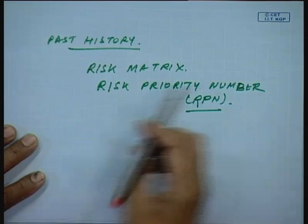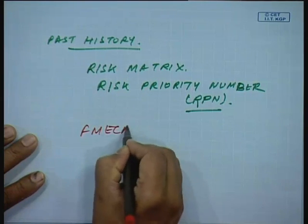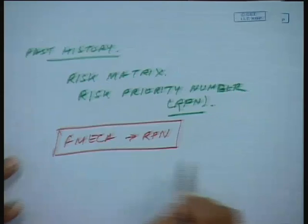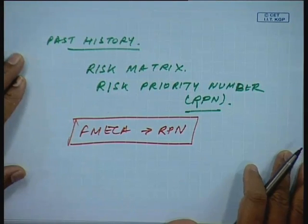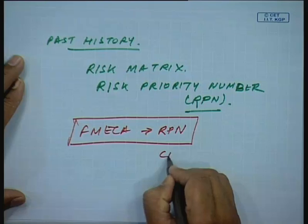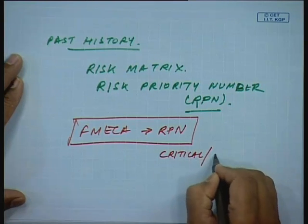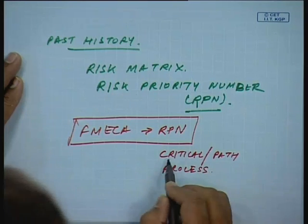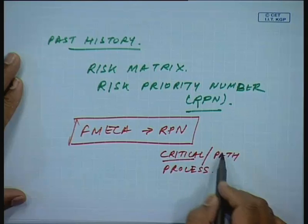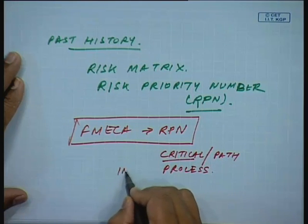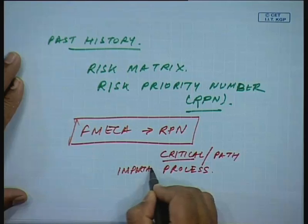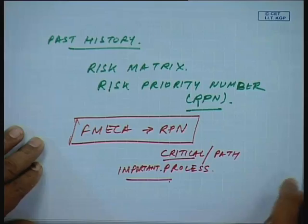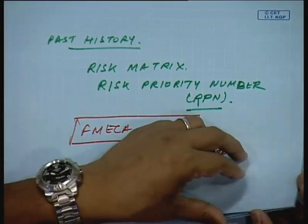The system analysis should be done at as high a level as possible, giving us a top-down view so that we do not leave out any component by an inadvertent error. The team review and risk ranking are very important for doing FEMICA, and they develop a risk matrix or what is known as a Risk Priority Number, or RPN.